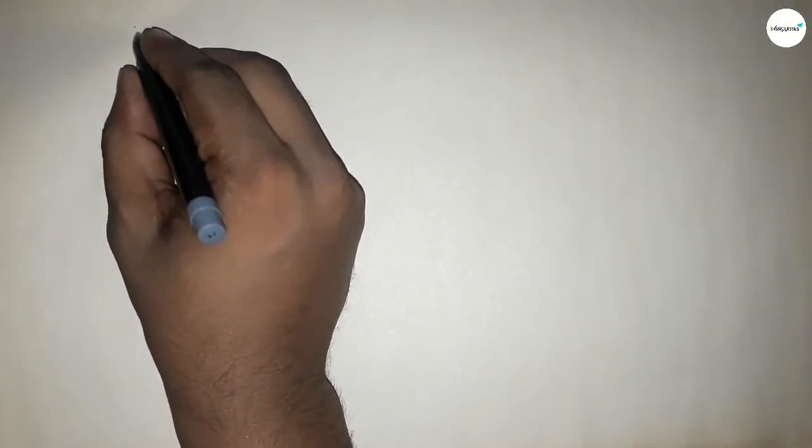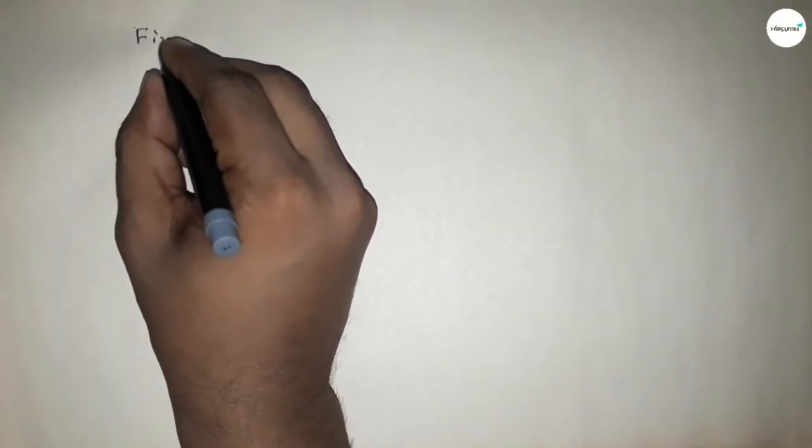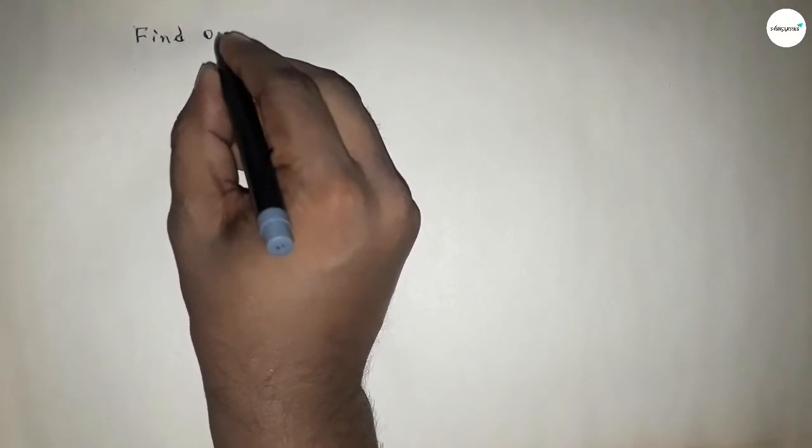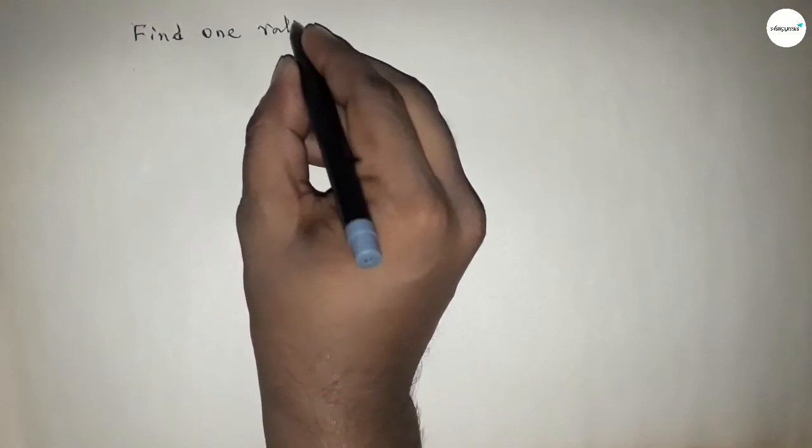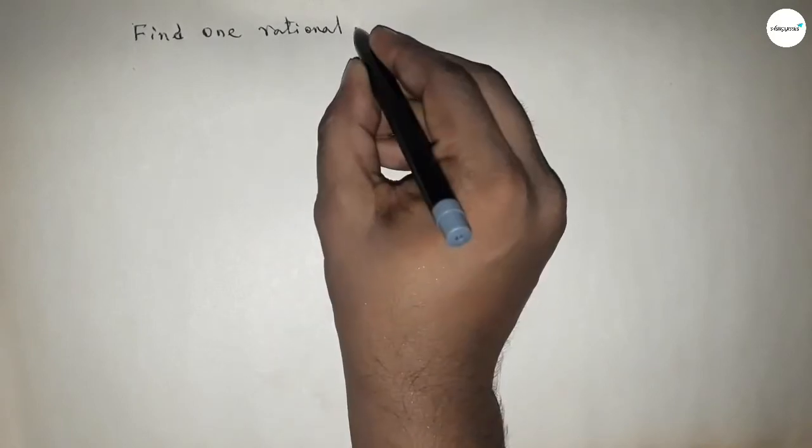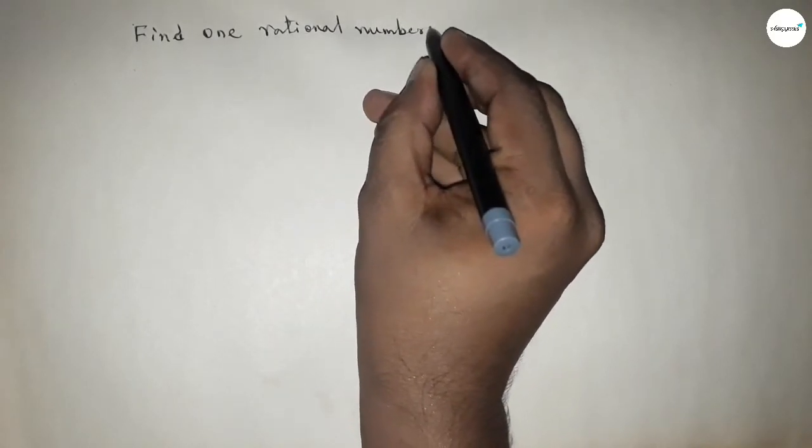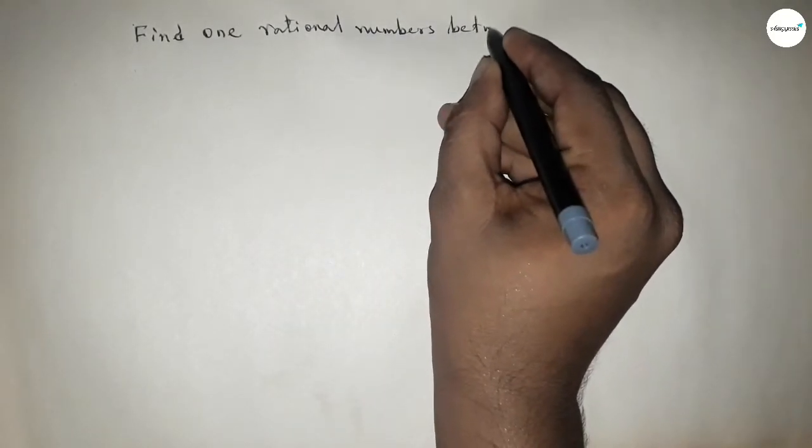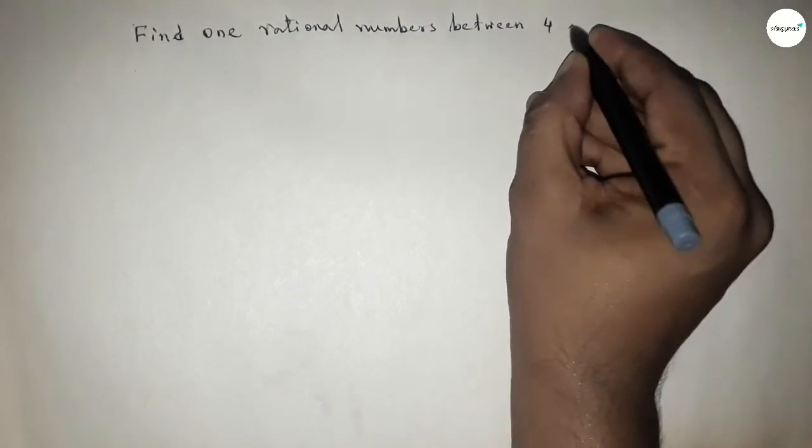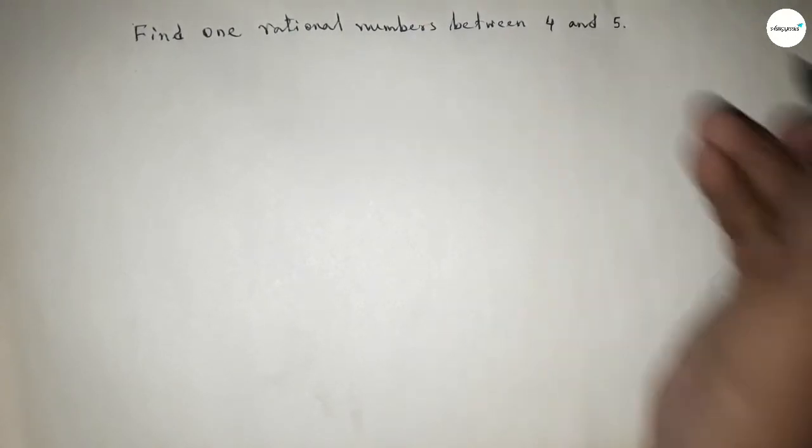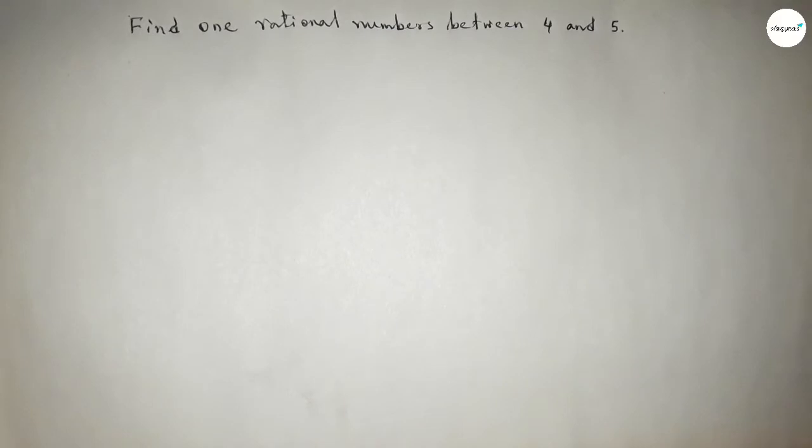Hi everyone, welcome to SS3 classes. Today in this video we have to find one rational number between 4 and 5. Finding one rational number between 4 and 5, so please watch the video till the end.